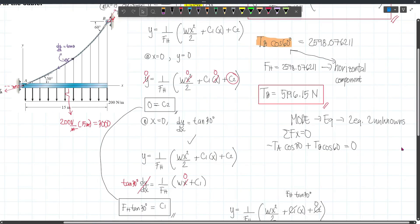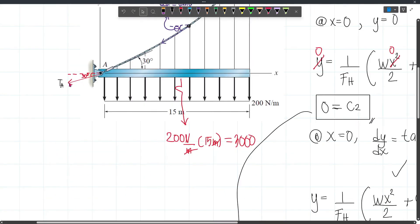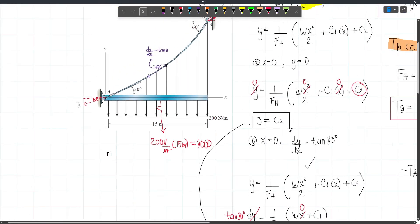For the summation of forces along Y, we have summation of FY is equal to zero. So we have the vertical component of TA, which is TA sin 30. And then it acts downward, so that's negative.